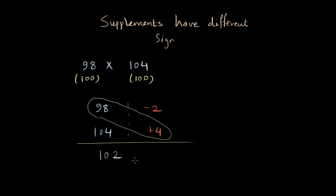Which is 98 plus 4, or rather 104 and minus 2. In both cases we will get 102. Because the base is 100 with two zeros, we will pad two zeros after 102.